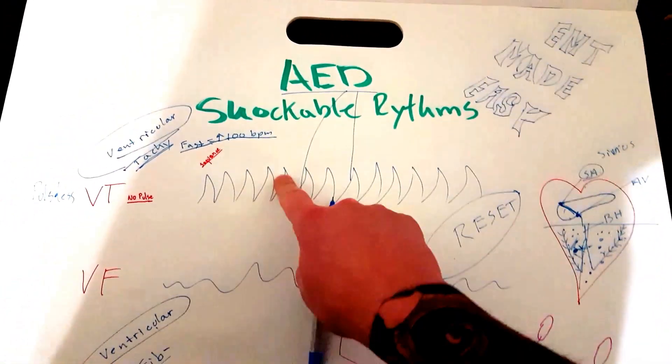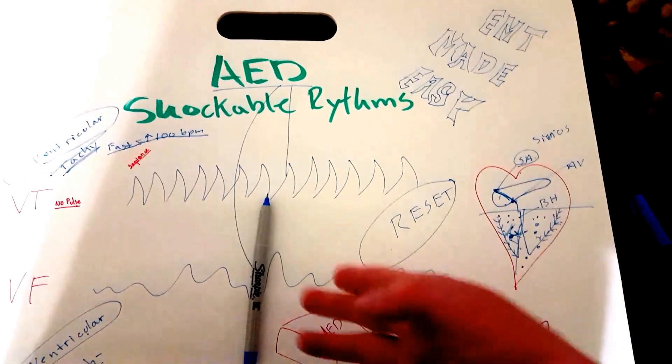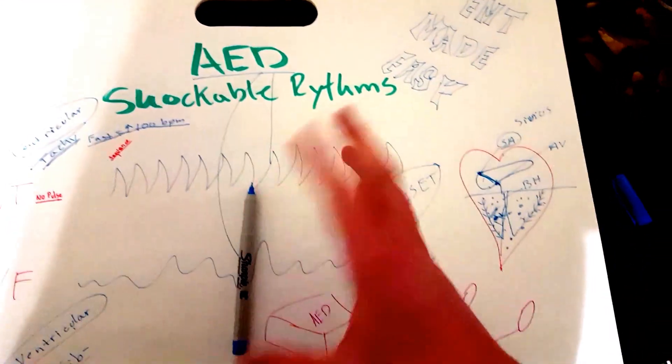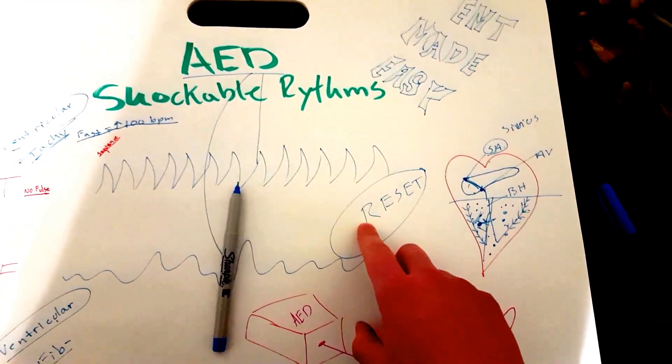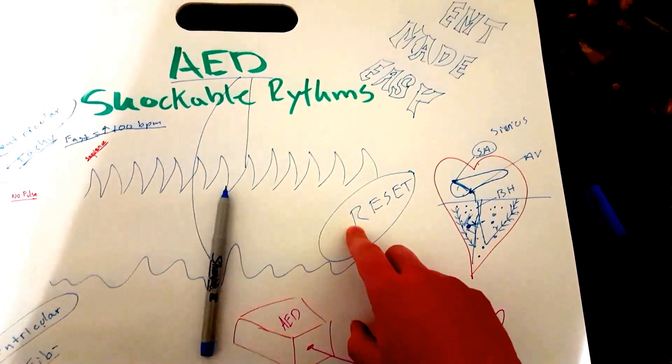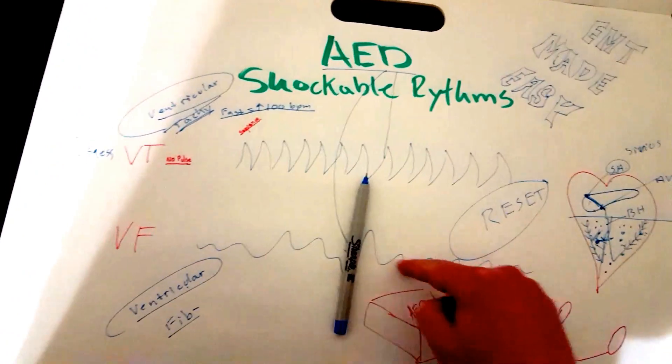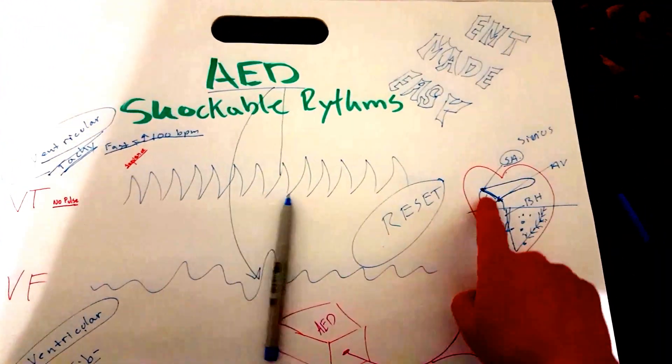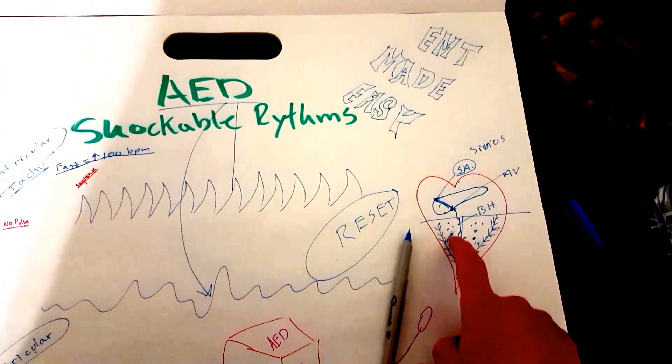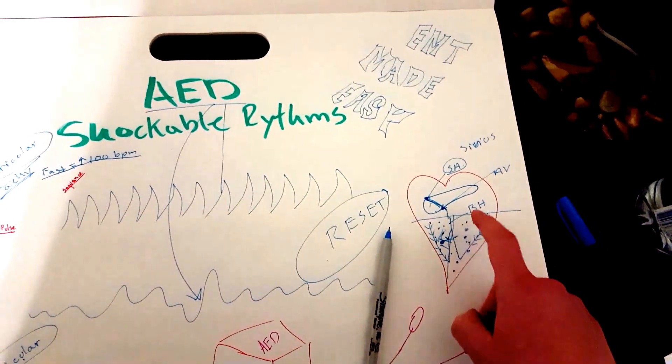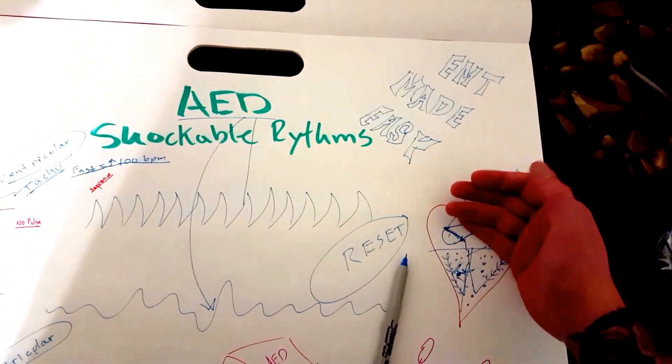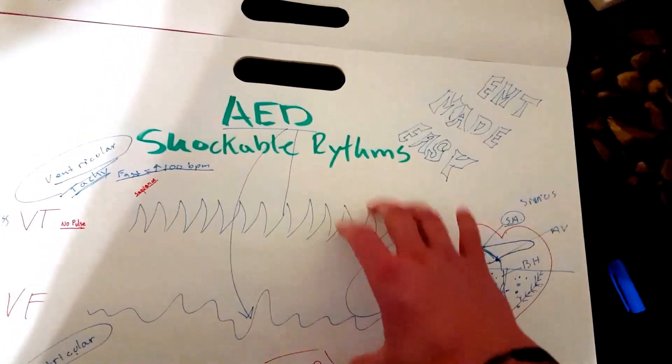The AED will detect these two rhythms. It will shock your patient, or it's going to prompt you, depending on which one. There's different ones to shock the patient. And it eliminates these dysrhythmias. So it takes them away, and it allows the normal sinus rhythm to go back on track. Your patient gets better, hopefully. And that's what the AED does.